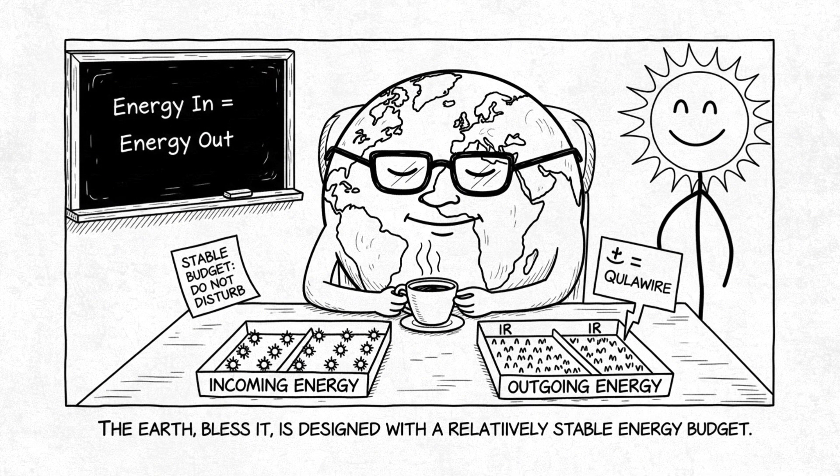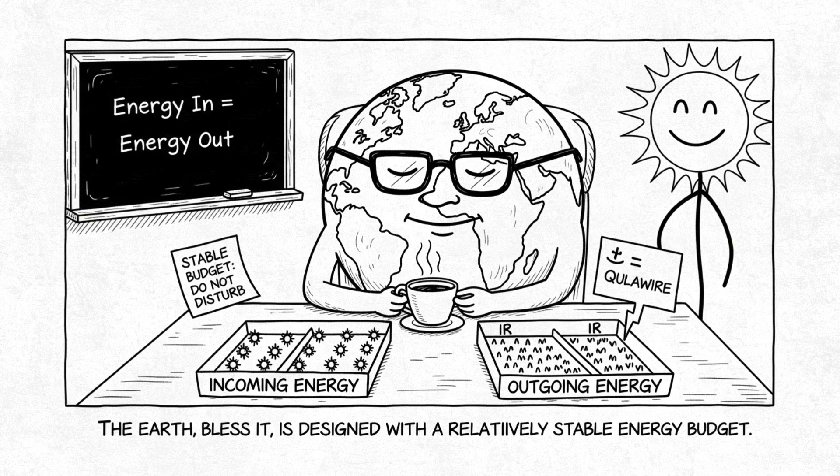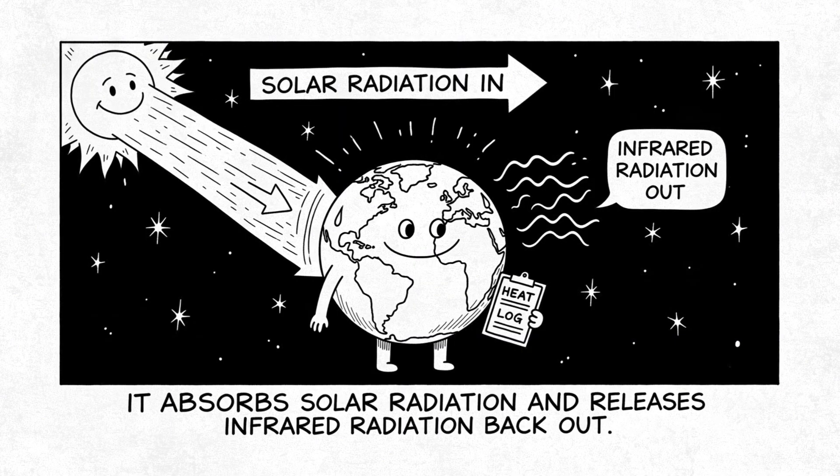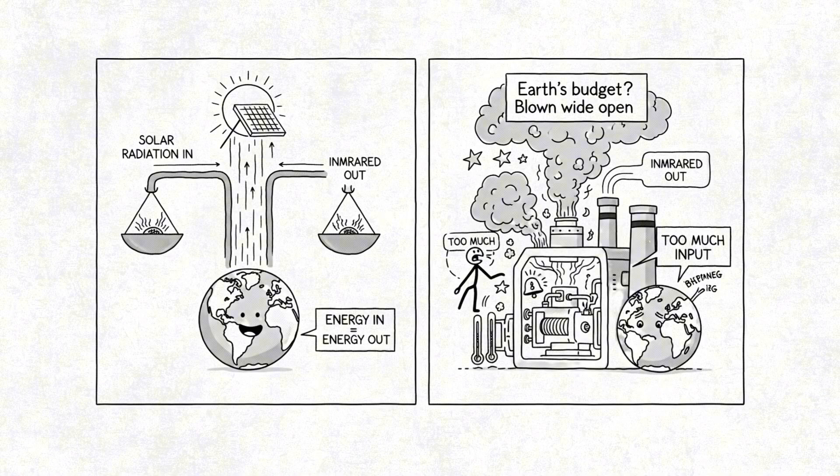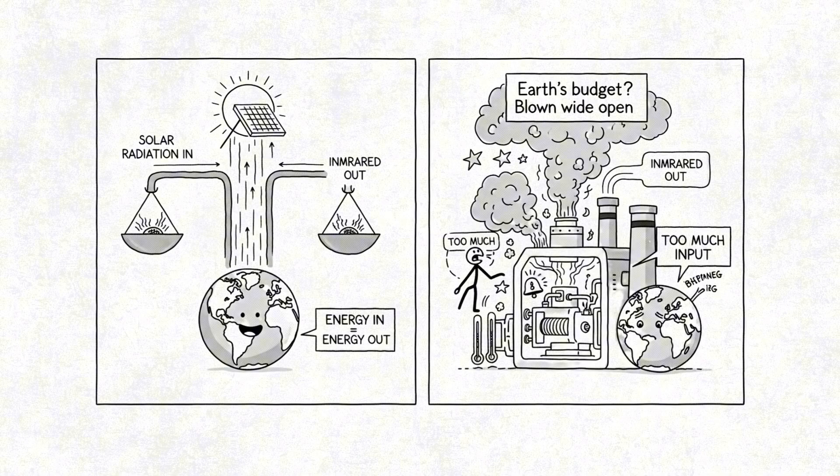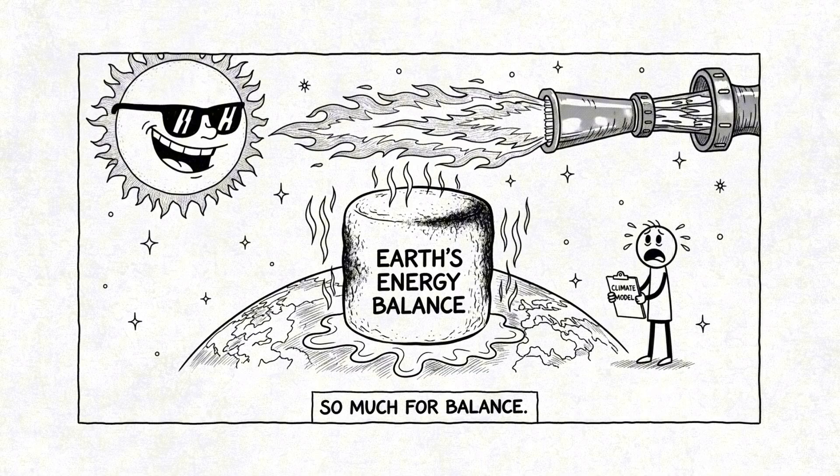The Earth, bless it, is designed with a relatively stable energy budget. It absorbs solar radiation and releases infrared radiation back out. But if we double the input, that balance gets roasted like a marshmallow over a flamethrower.